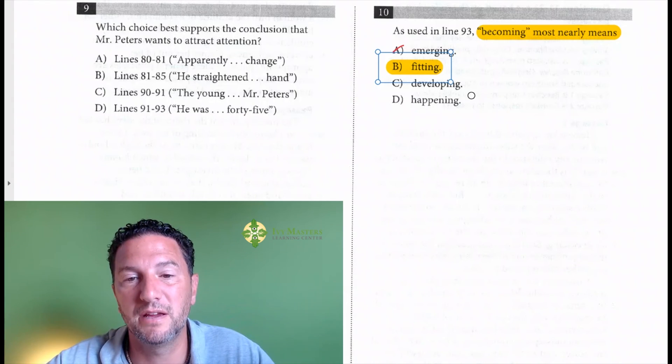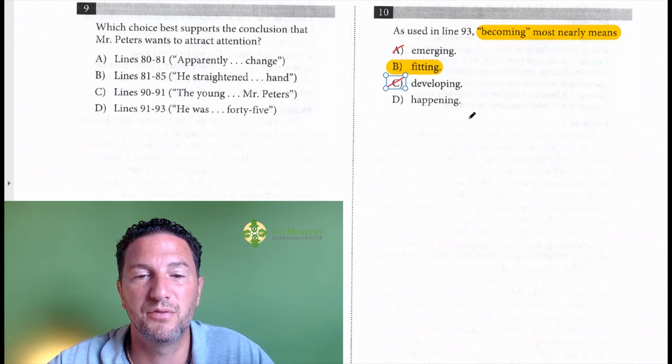Not developing of a man of 45, and again becoming and developing could be synonyms in a different context, but not this one. And not happening of a man of 45 doesn't really make sense either. So your correct answer here is B.